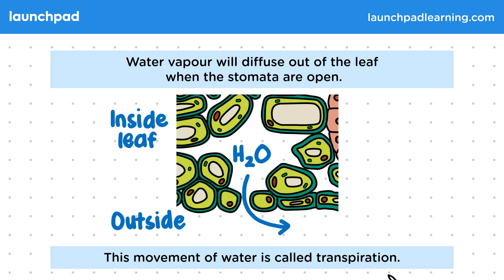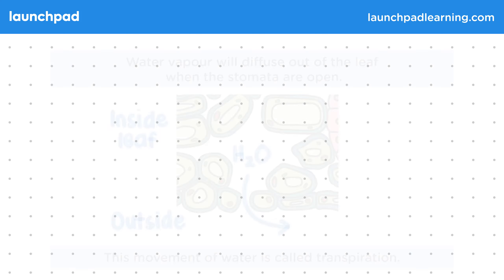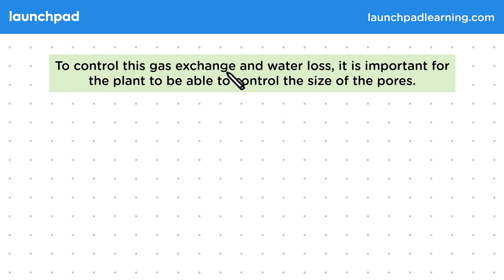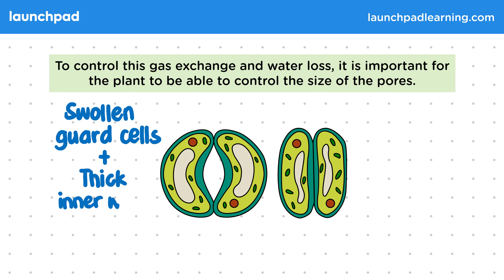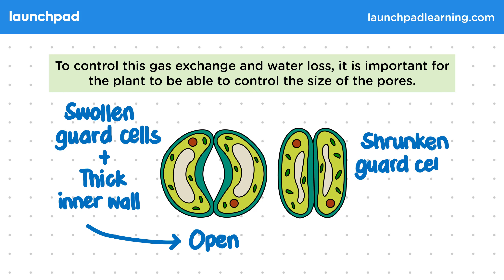What's the role of the guard cells of the stomata? To control this gas exchange and water loss, it's important for the plant to be able to control the size of the pores. This open stoma on the left has occurred because the guard cells are swollen and they also have a thick inner wall, which creates an open pore. However, guard cells lacking in water become shrivelled and as a result, give a closed stoma. You need to be able to explain that the stomata have guard cells that allow for the control of the size of the pores and therefore control gas exchange and water loss from the plant.